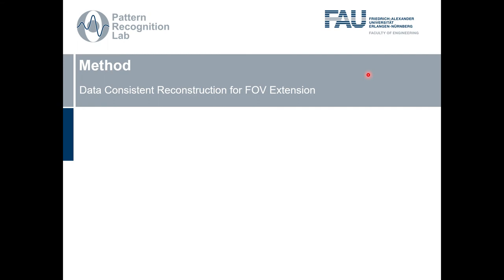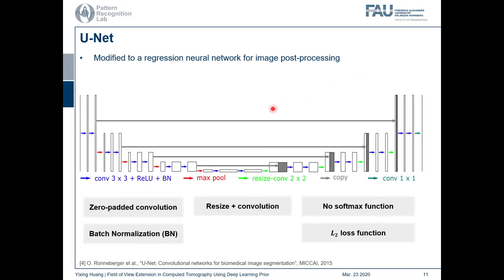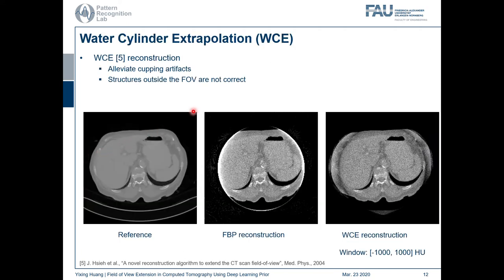Here I will talk about our data consistent reconstruction method for FOV extension. The neural network we use is the state-of-the-art U-Net. The input of the U-Net is an image reconstructed from water cylinder extrapolated (WCE) data. Water cylinder extrapolation is a widely used extrapolation method to reduce cupping artifacts. Compared with the FBP reconstruction, the brightness or cupping artifacts are reduced very well. However, the anatomical structures outside the FOV are still not correct compared with the reference image, which is why we still need deep learning to further improve these anatomical structures outside the FOV.